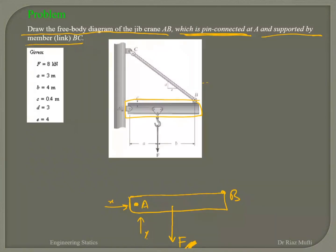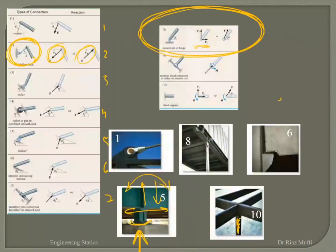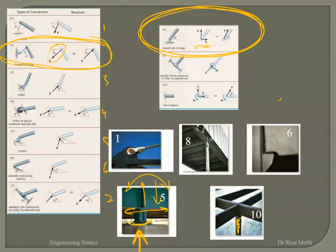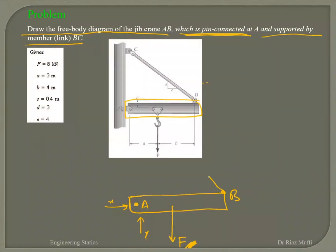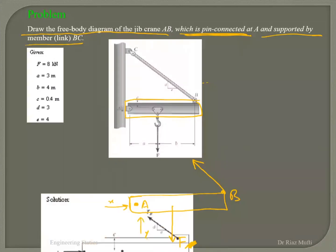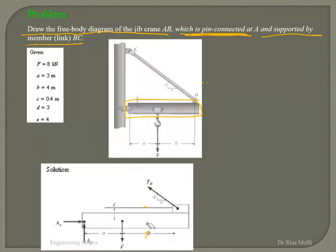The other support at point B is a link. The link tells me there is only one reactive force, and that reactive force is along the direction of the link. There's no reactive moment because it's pivoted. So I go back and mark the reactive force at B along the link direction. This completes my free body diagram. You also have to put all the dimensions on it.